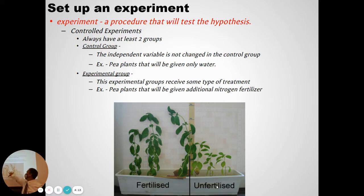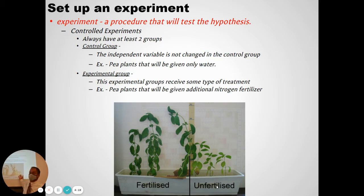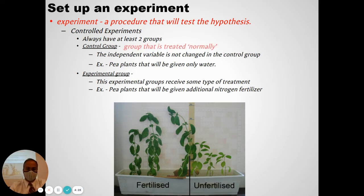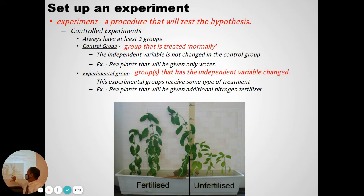That's why we have those two groups — the control group and the experimental group. Sometimes we might have more than one experimental group if we test various levels of something. For example, in the fertilized plants versus unfertilized plants experiment, the unfertilized is the control group and the fertilized is the experimental group. The control group is giving me something I can use for comparison. In the experimental group we change the independent variable — the one thing we're trying to alter.